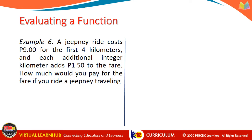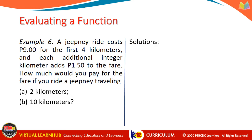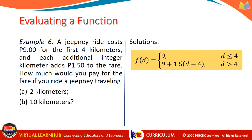Example number 6. A Jeepney ride costs 9 pesos for the first 4 kilometers, and each additional integer kilometer adds 1 peso and 50 cents to the fare. How much would you pay if you ride a Jeepney traveling a, 2 kilometers, and b, 10 kilometers? To solve this, we first write a piecewise function: f of d equals 9 if d is less than or equal to 4, and 9 plus 1.5 times (d minus 4) if d is greater than 4.